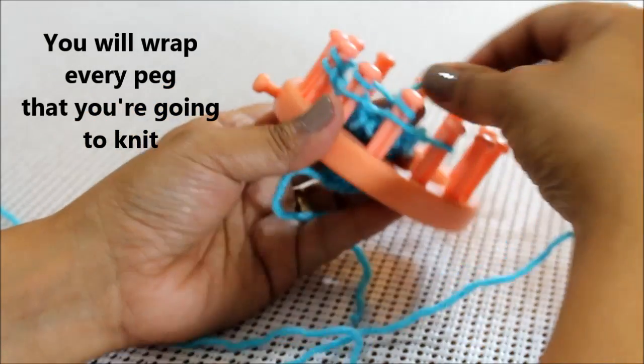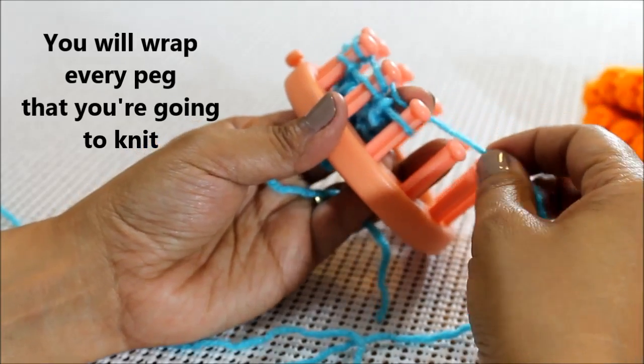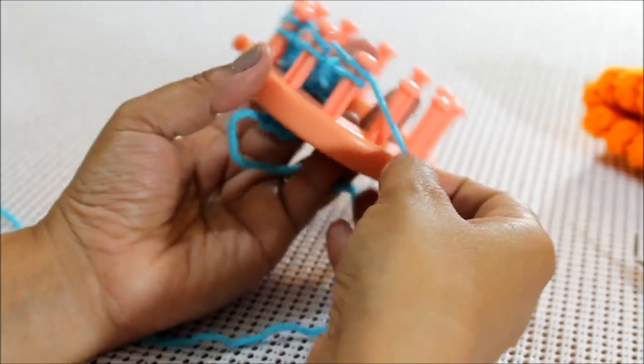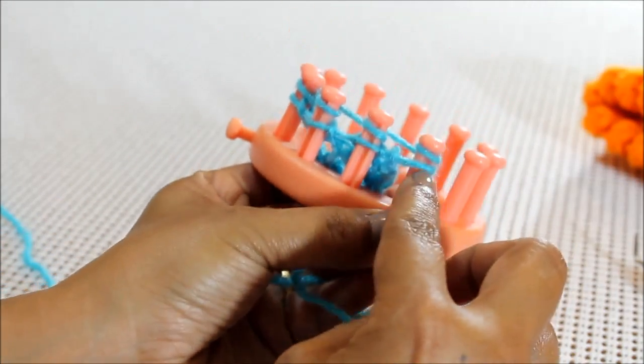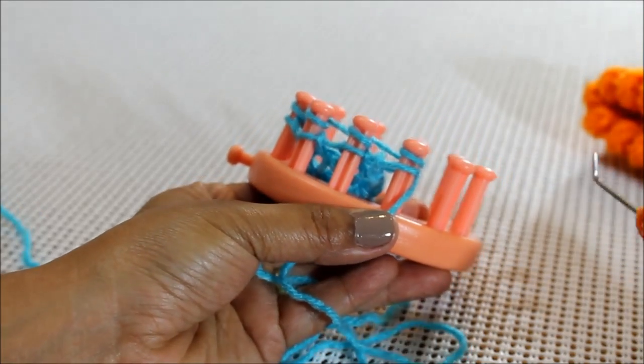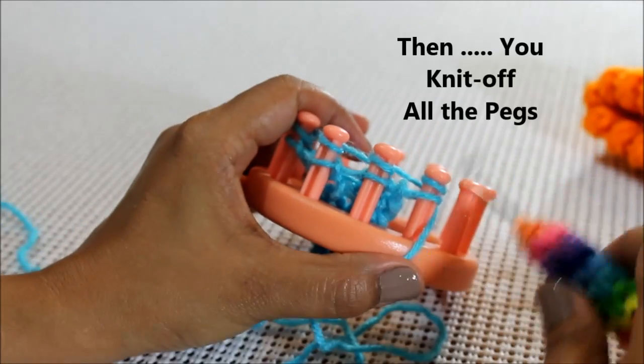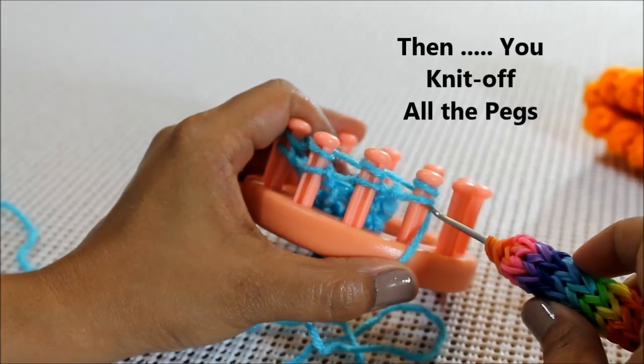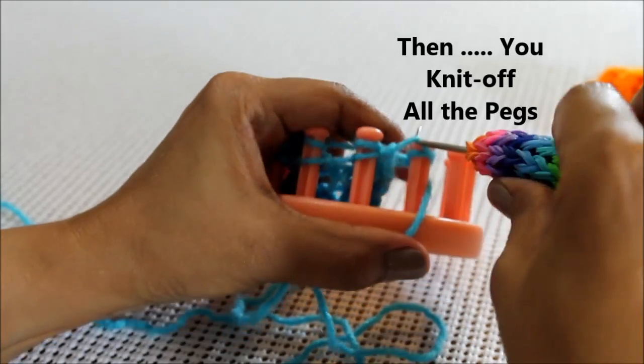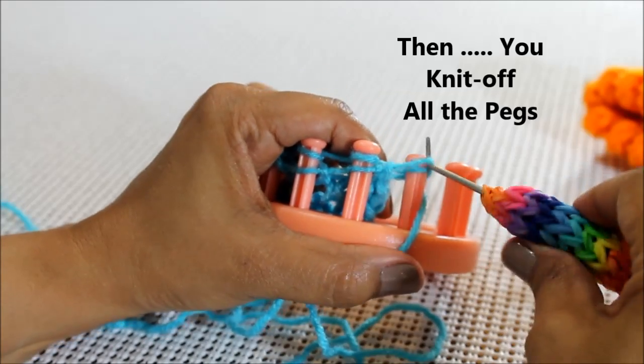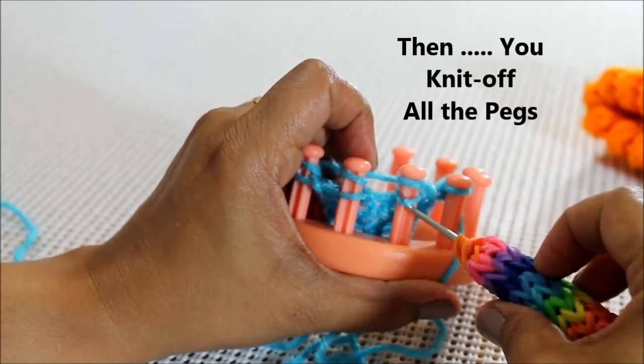So you're wrapping each peg, right, and now you're left with a loop on the bottom and one on the top. And what you're going to do is you take your pick and you lift the bottom over the top and to the back, which is called, of course it doesn't want to do it, that's called a knit off.